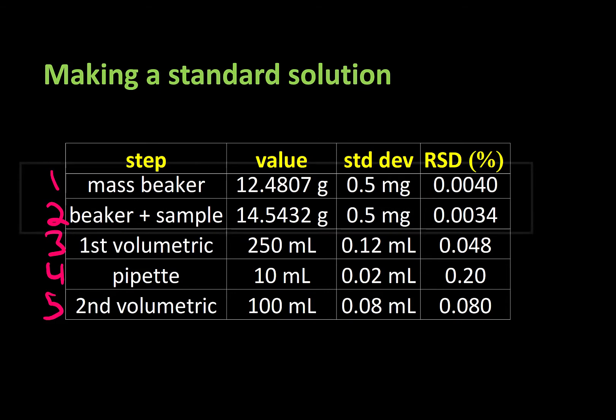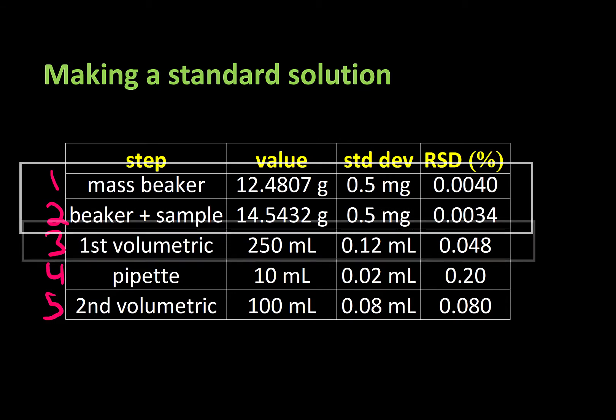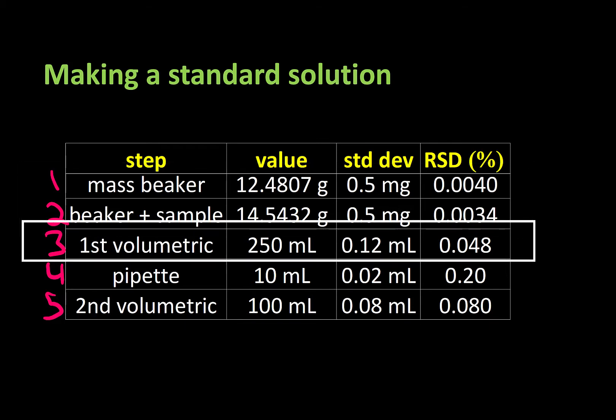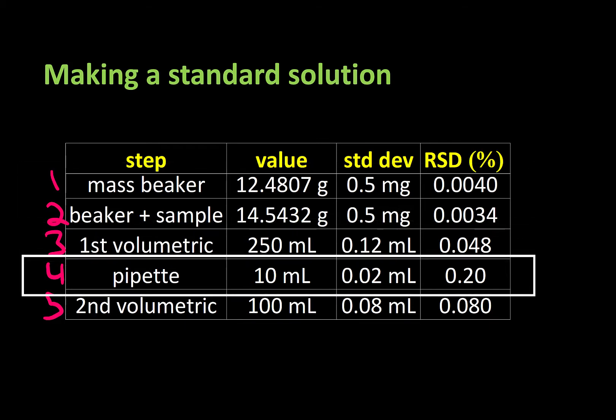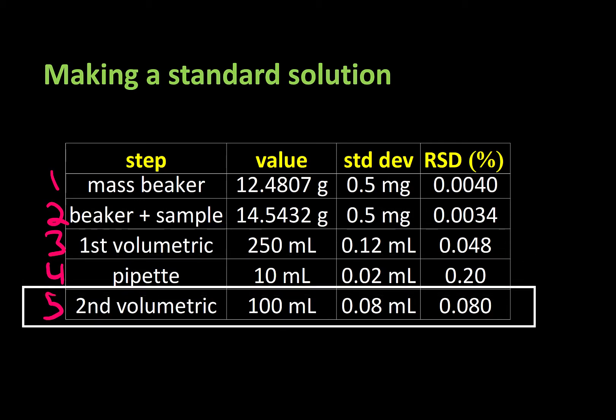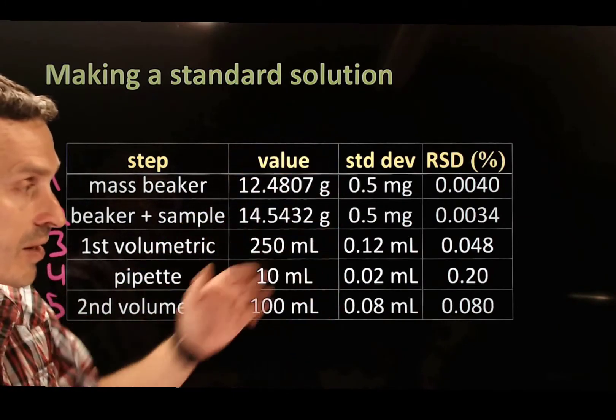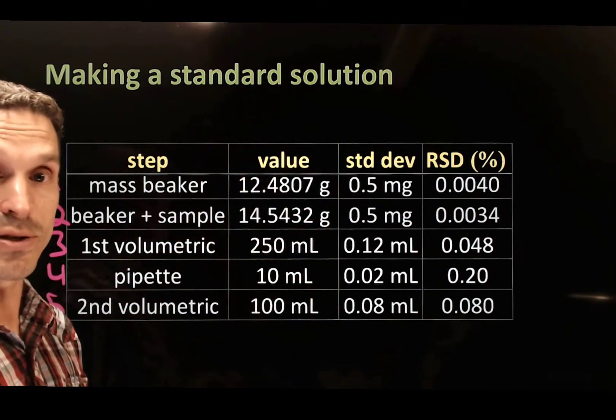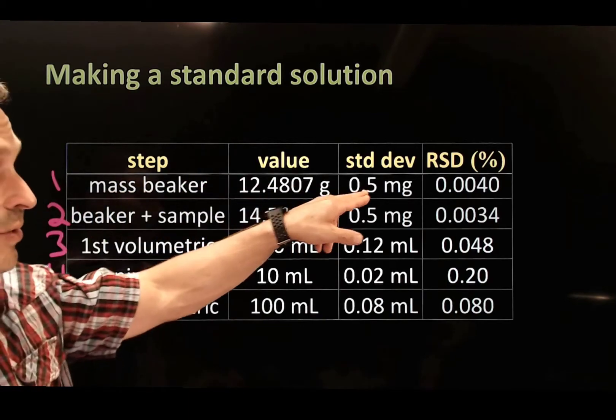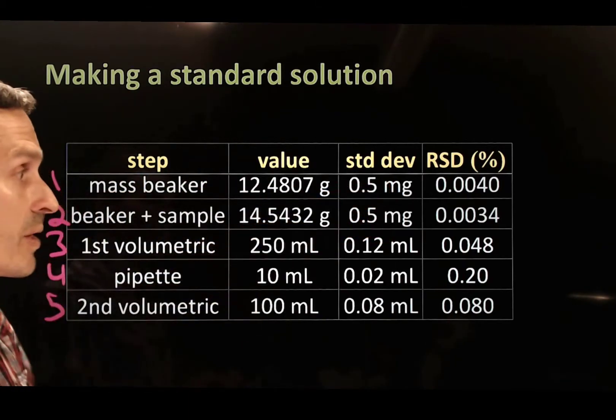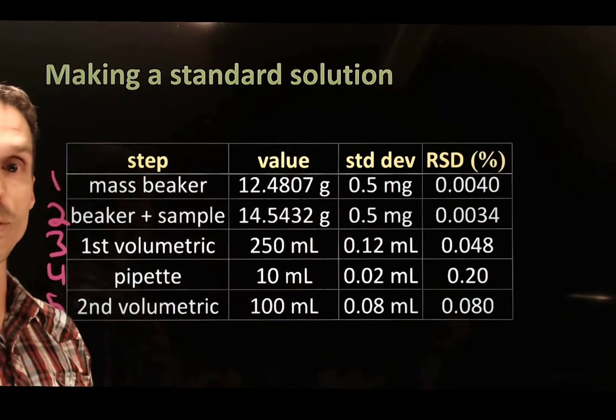You see that we weigh our sample by weighing the beaker first and then the beaker plus the sample. The sample is transferred to a volumetric flask and then using a 10 mL pipette we draw out a small volume of that, transferring into a second flask to get our final volume. Each of these devices has a standard deviation and usually this comes straight from the manufacturer. So they will report that the balance that you're using has a certain tolerance to it just like all the glassware has tolerance as well.